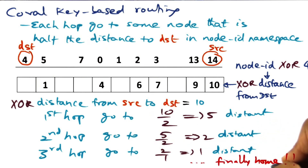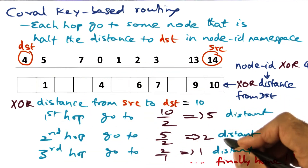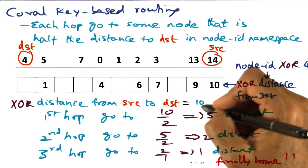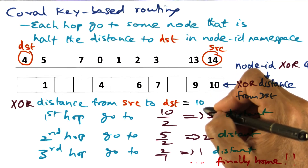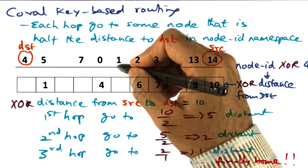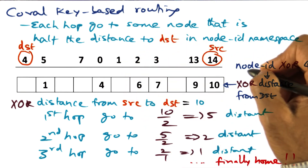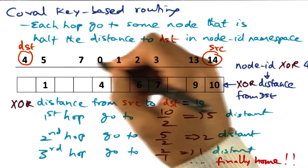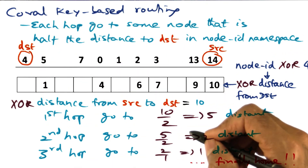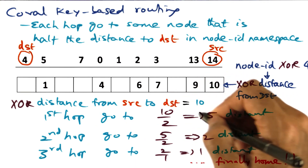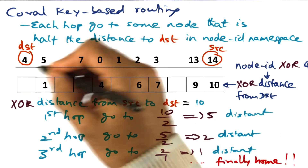That's the idea behind Coral key-based routing. Of course, when I have a particular distance metric like 10 in this case and I want to go half the distance in the first hop, I may not have a direct way of reaching the node who is half the distance to the desired node. So let's see how Coral key-based routing actually works given this particular example.